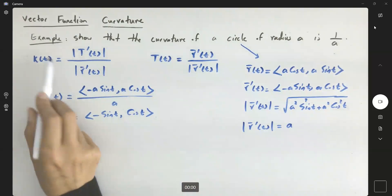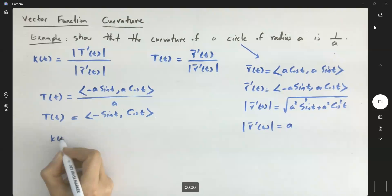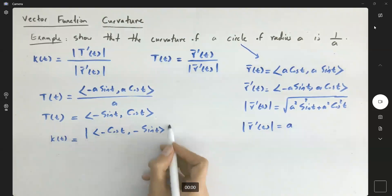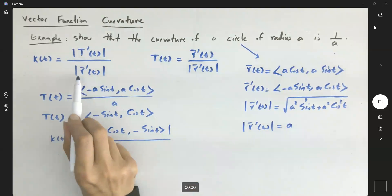Now, for the curvature itself, the curvature is equal to, now we need to take the derivative and find the magnitude of the unit tangent vector. You're finding the magnitude of negative cosine T and negative sine T divided by the magnitude of R prime.